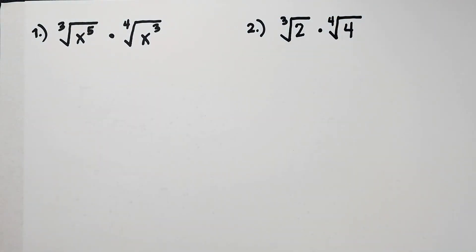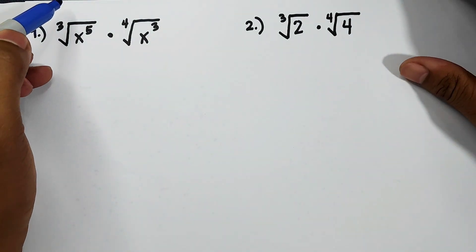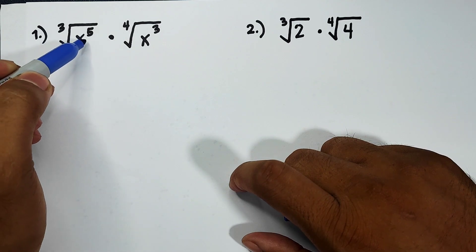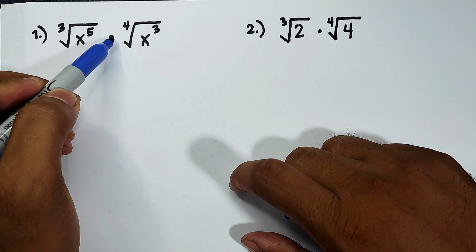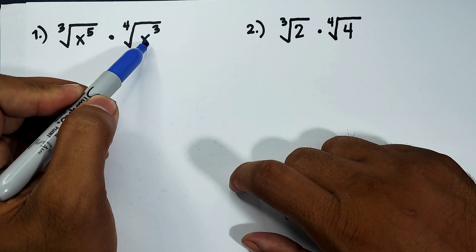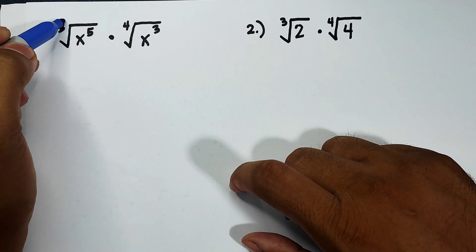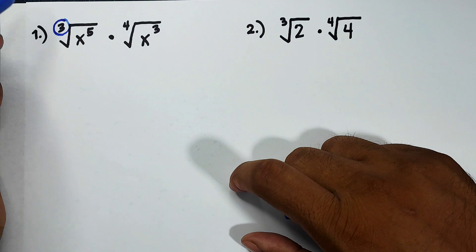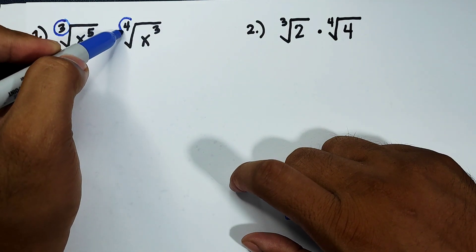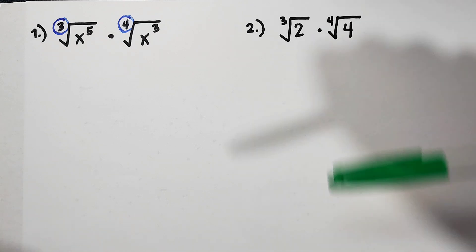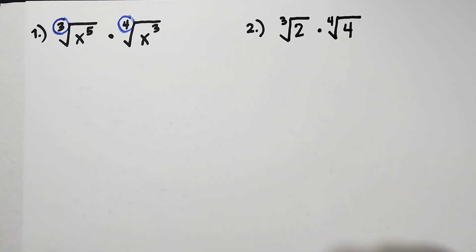So when you say radicals with different index, it talks about the numbers outside the radical expression. Here, we have the cube root of x raised to 5 times the fourth root of x cubed. As you can see, we have 3 as our index here and 4 as our index here. Now, how are we going to multiply these radicals with different indices?